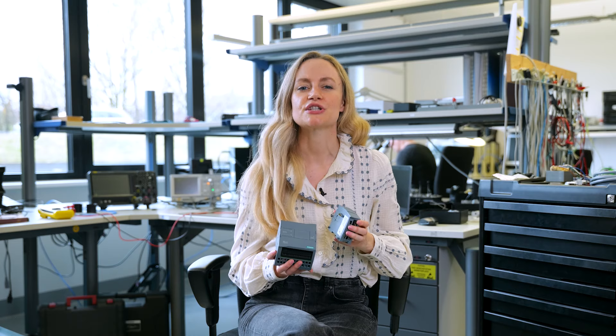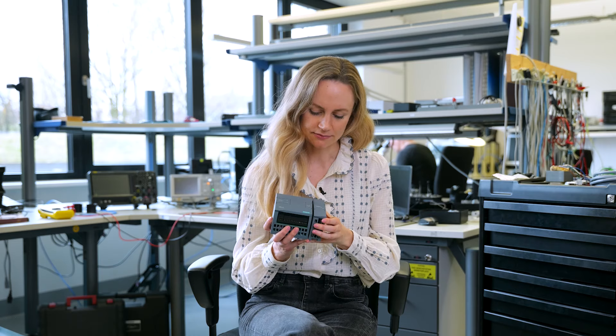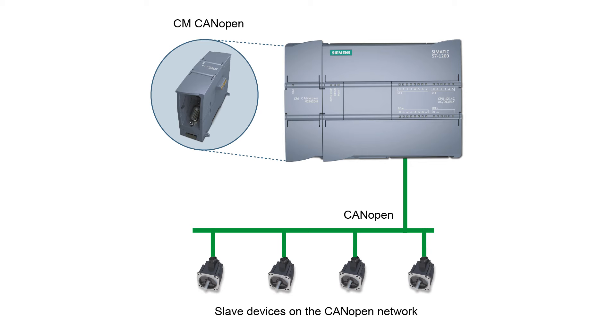The Siemens CANopen Master Slave module. The brilliant thing about it — just stick it on the S7 and you're done. And just like that, you can connect up to 16 CANopen secondary nodes. The simplest ideas are always the best.